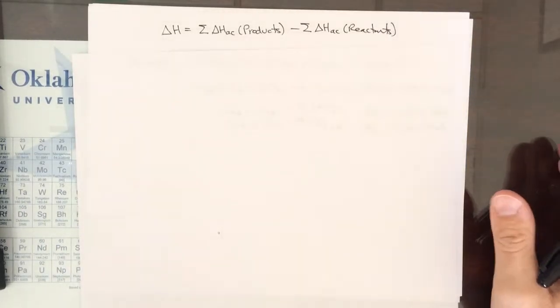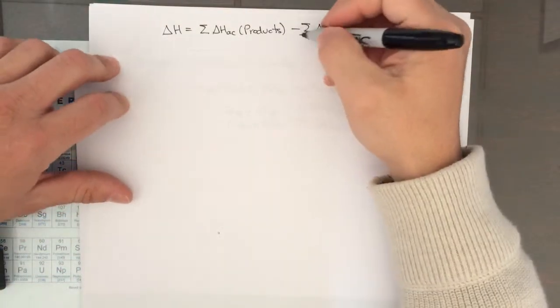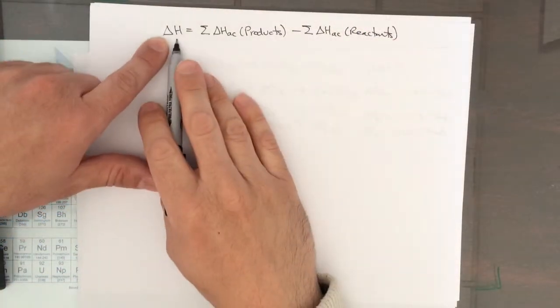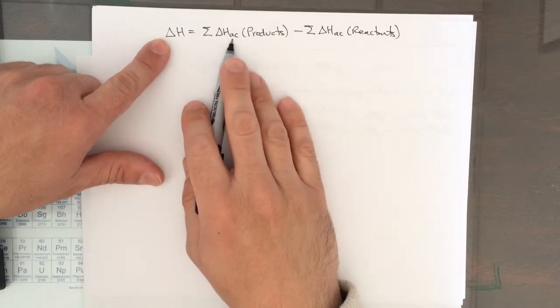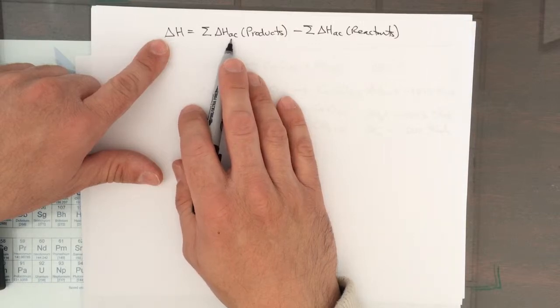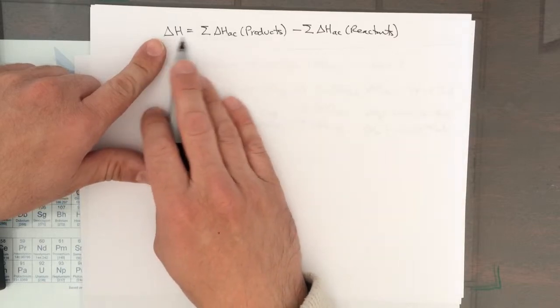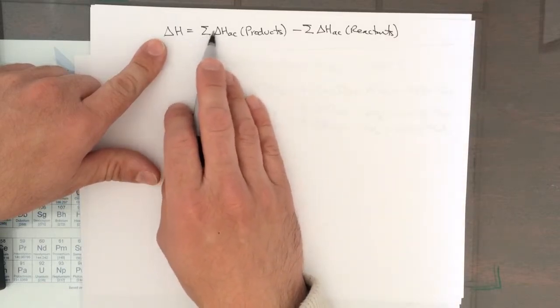A couple of days ago we were discussing the question of where this minus sign comes from in this equation. This is the equation to calculate delta H from delta HACs or from delta HF's values that are tabulated in the back of your course packet or most textbooks.